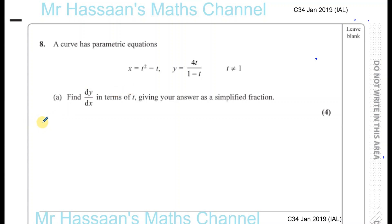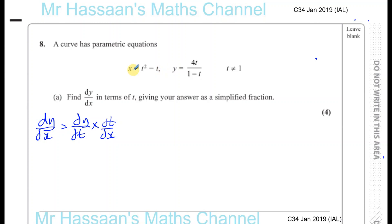So when we want to find dy dx, it makes life a lot simpler if we do dy dt times dt dx, like using the chain rule. So we've got to find dy dt and dx dt and invert dx dt. Now dx dt is pretty simple, it's going to be 2t minus 1, so that will be inverted, so that will become 1 over 2t minus 1.